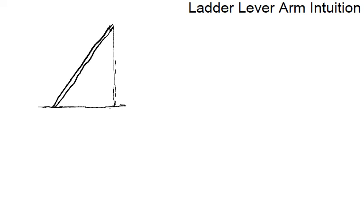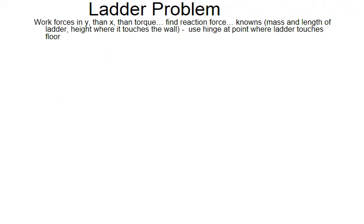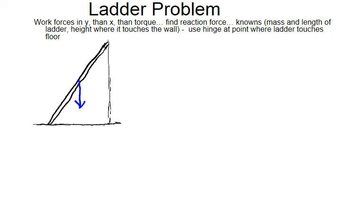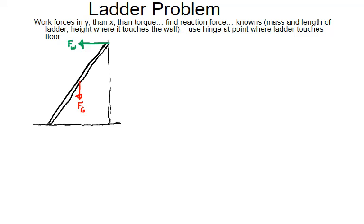Let's work through this with the ladder problem. Draw a ladder sitting up against a wall. We can identify all the forces: the force of gravity on the ladder acting downward, the wall pushing back against the ladder horizontally — assuming no friction on the wall — friction at the base preventing the ladder from slipping out, and a normal force pushing upward to counteract gravity. So we have four forces: wall force, force of gravity, normal force, and friction.